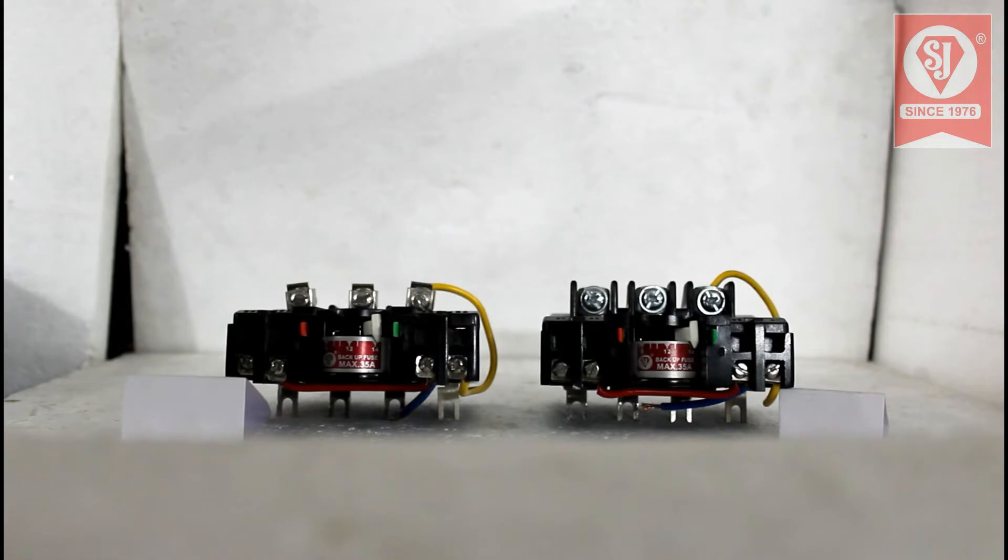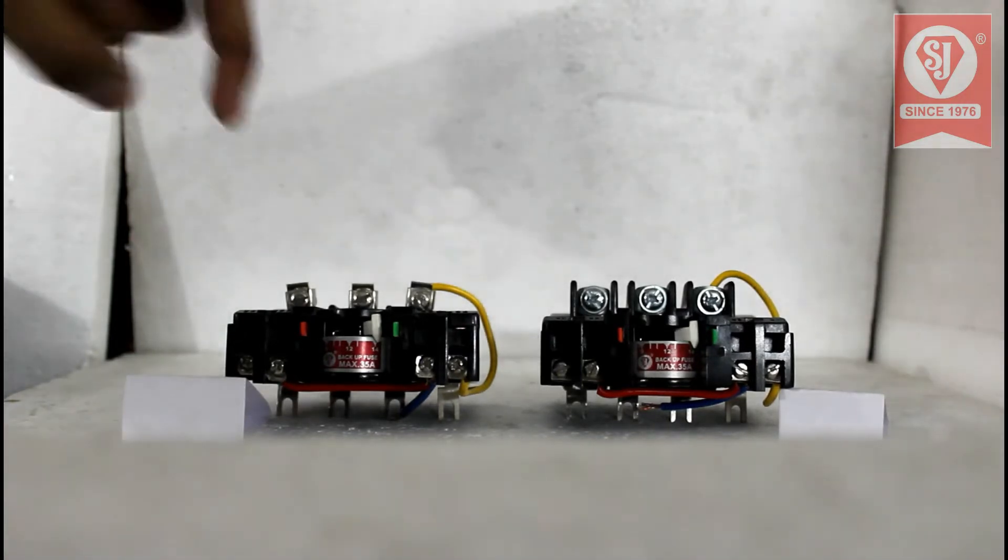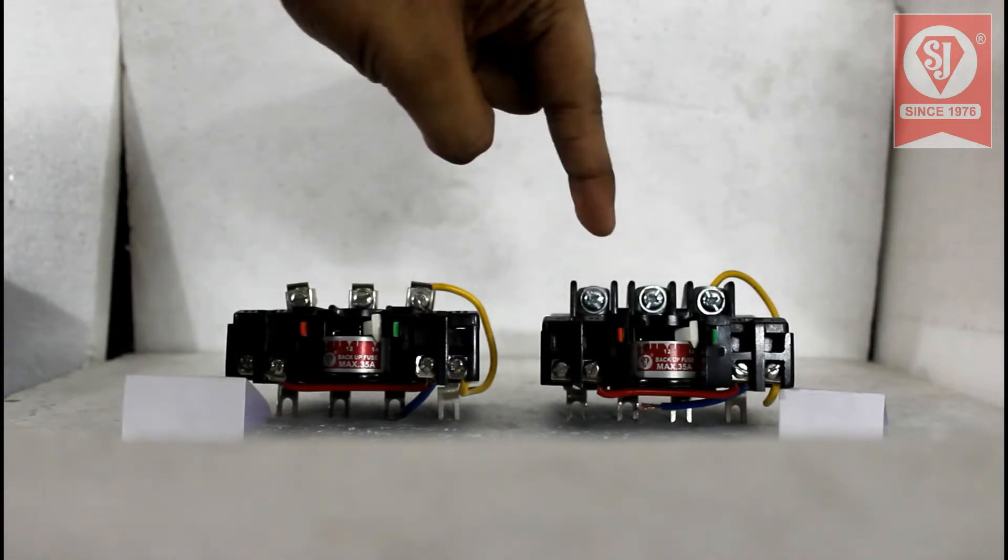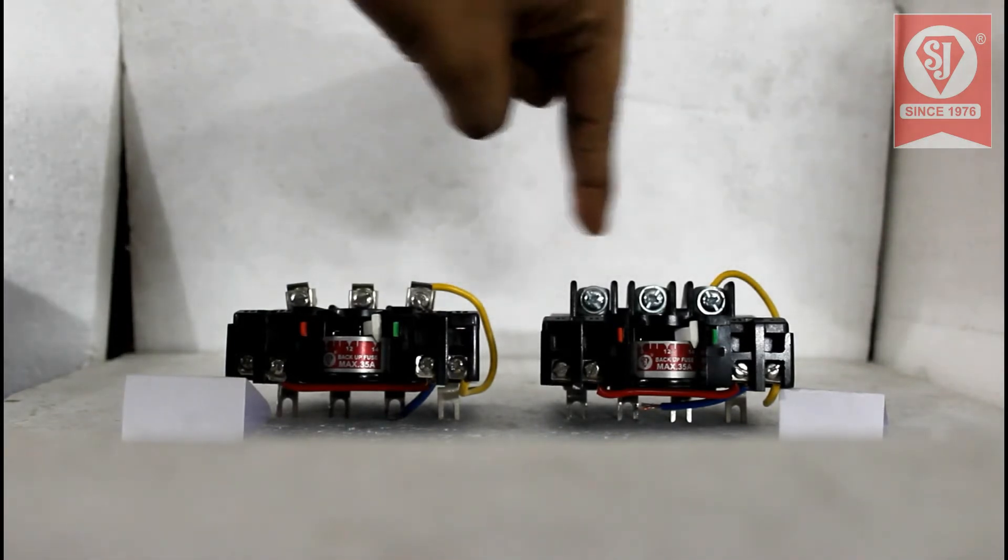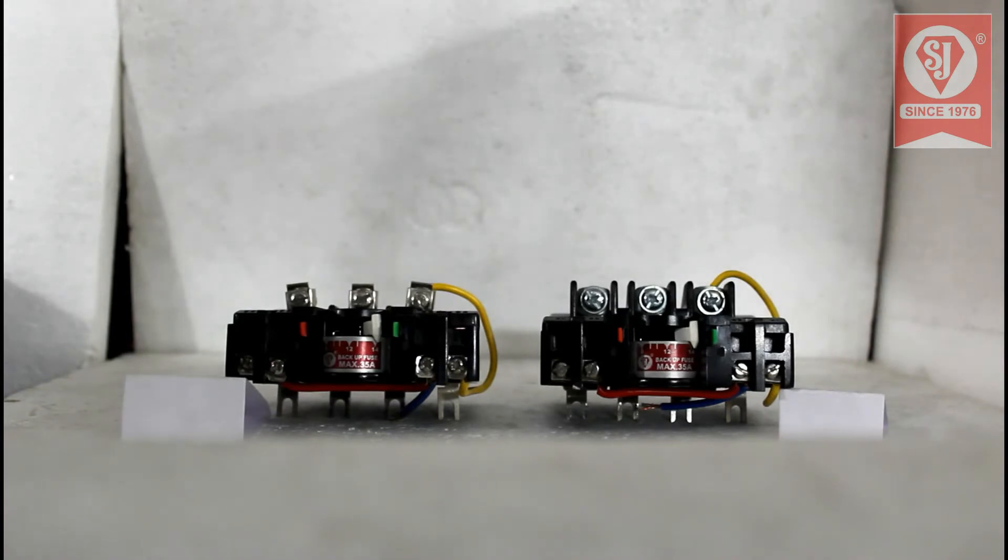In MJ1 relay, these incoming terminals can withstand up to 21 amps. Whereas in MJ1 plus relay, these terminals can withstand up to 40 amps.